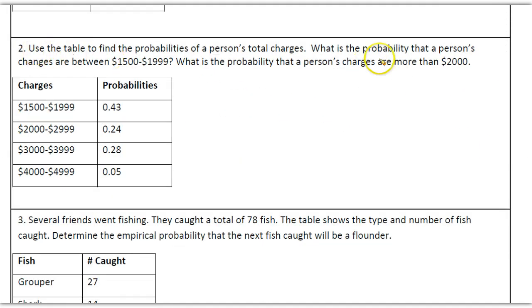So for example, 2 charges this, and then later more than this. So looking at this one, between this and this, this is the probability there. And for this next one, more than 2,000. So 2,000, you would add these three up. And then this would add up to 0.57.